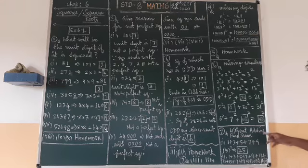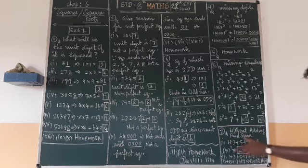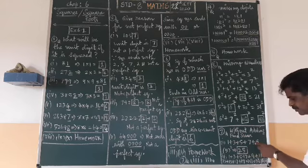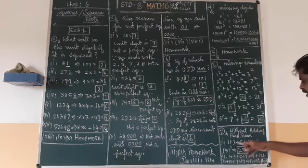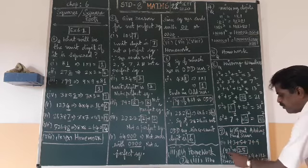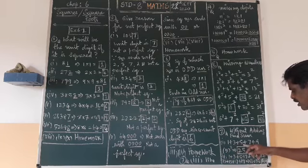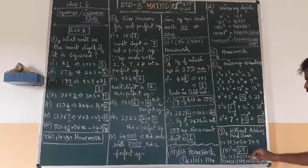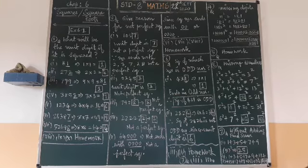The seventh question asks: without adding directly, find the sum of these odd numbers. For example, 1 plus 3 plus 5 plus 7 plus 9 — how many odd numbers are there? There are 5 odd numbers. So 5 squared equals 25. That is the answer. You can verify: 1 plus 3 is 4, plus 5 is 9, plus 7 is 16, plus 9 is 25. You get 25. Instead of adding directly, count the odd numbers and square that count.